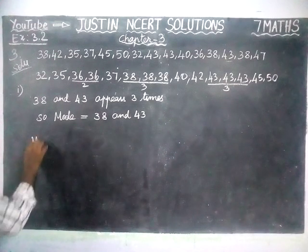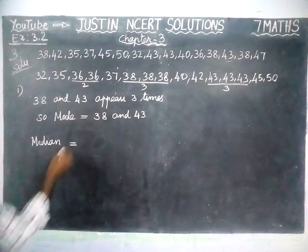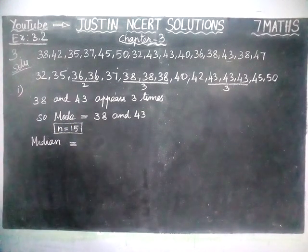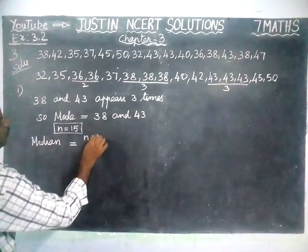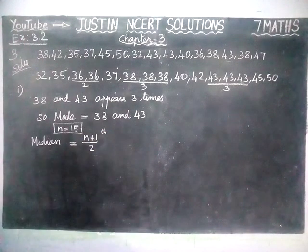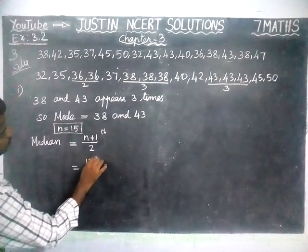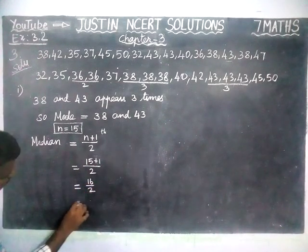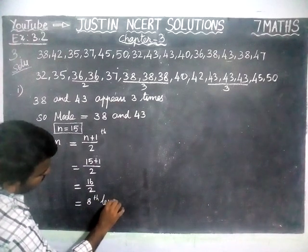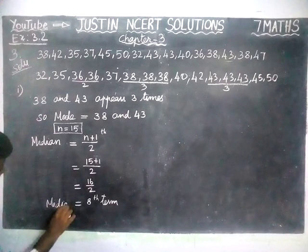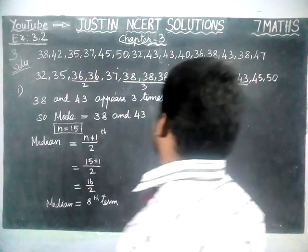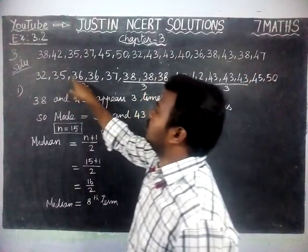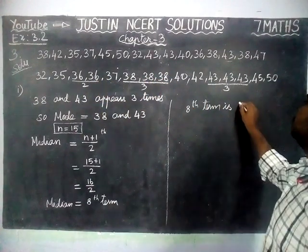Next, we are going to find median. Median is equal to — here, n value, the total number of students, is equal to 15. So 15 is an odd number. If it is an odd number, we use the formula: (n + 1) divided by 2, the term. Now, n = 15, so 15 plus 1 divided by 2 is equal to 16 divided by 2, which is equal to the 8th term. So, median is equal to the 8th term. Counting the arranged data: 1, 2, 3, 4, 5, 6, 7, 8 — the 8th term is 38.